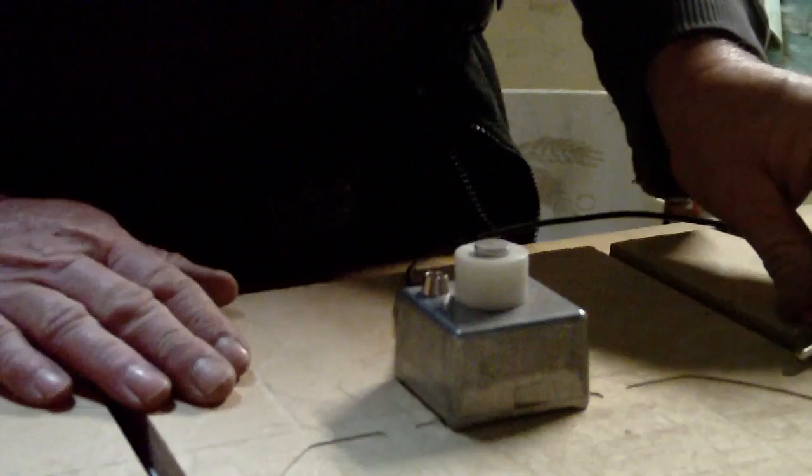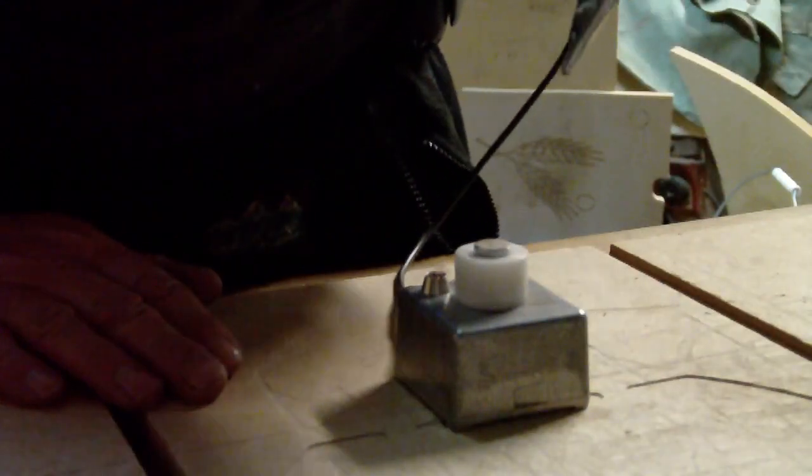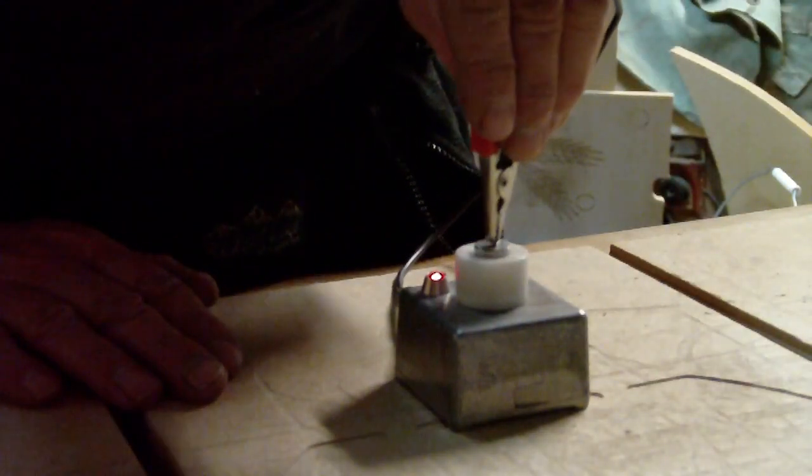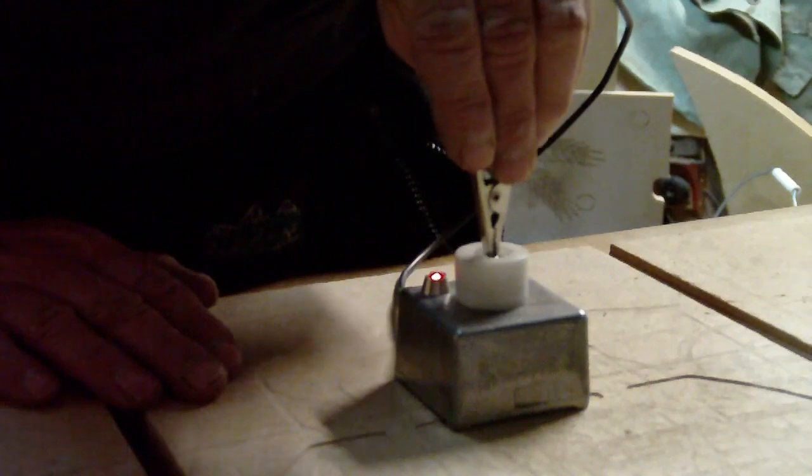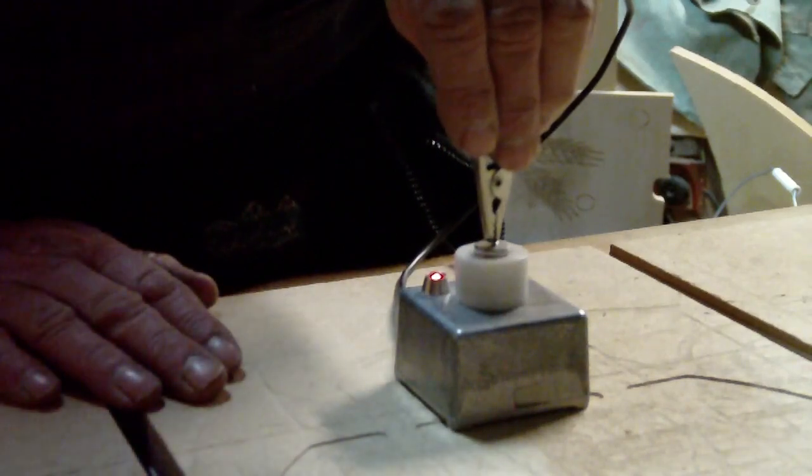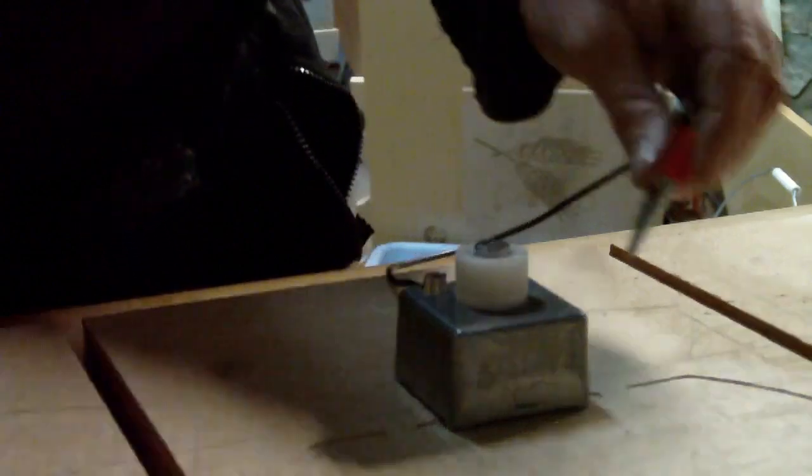The good thing about this particular unit though is this button, in that if the cutter when it's coming down goes too far the button can depress maybe about 8 millimeters or more, so there's plenty of time to stop it if things go astray.